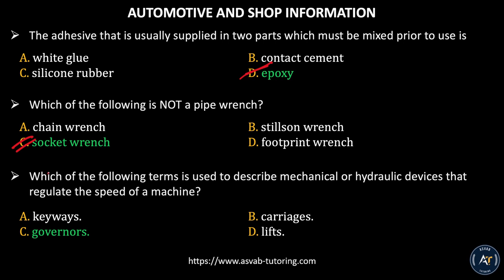Next question: which of the following terms is used to describe mechanical or hydraulic devices that regulate the speed of a machine? Option A, keyways. Option B, carriers. Option C, governors. Option D, lips. The correct answer is governors.